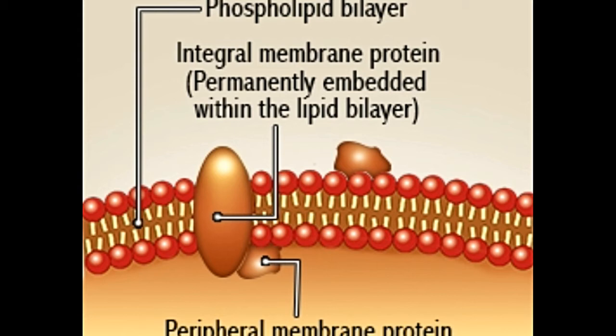All biological membranes have a similar phospholipid bilayer structure with proteins embedded in it. Lipids that are usually found in biomembranes include phospholipids, glycolipids, and cholesterol.